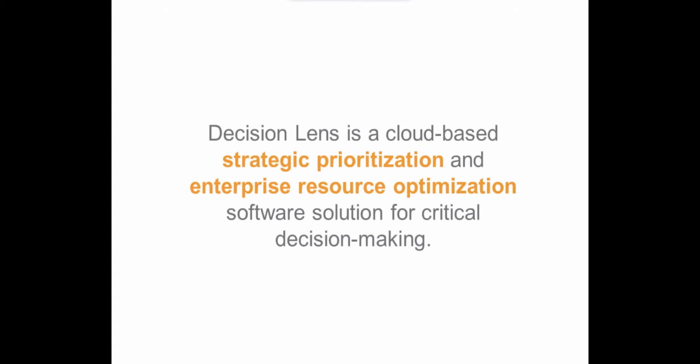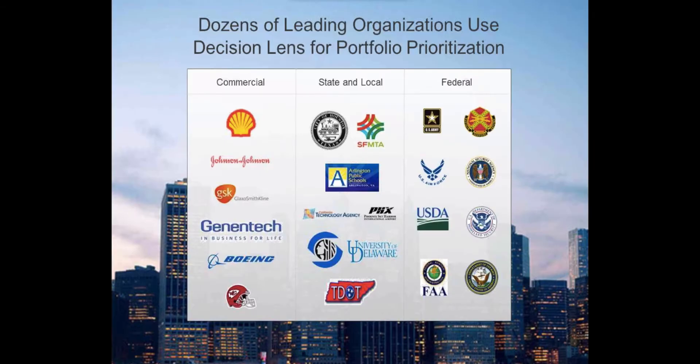DecisionLens is a software solution for strategic prioritization and resource optimization. Our analytics and visualizations provide clients with the insights they need to prioritize their capital investments and then optimally allocate their resources to the projects and programs that really give them the biggest bang for their buck. We serve a multitude of commercial and federal and state and local organizations. Our capital assets solution has been hugely successful in the public sector. We have the privilege of working alongside these planning teams throughout the year, so we're very familiar with the challenges that they face.